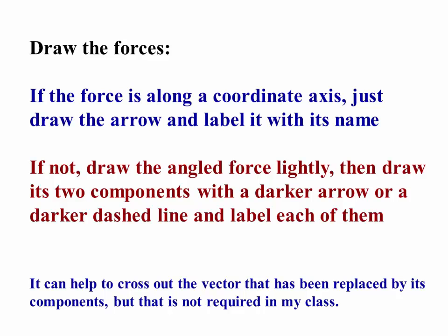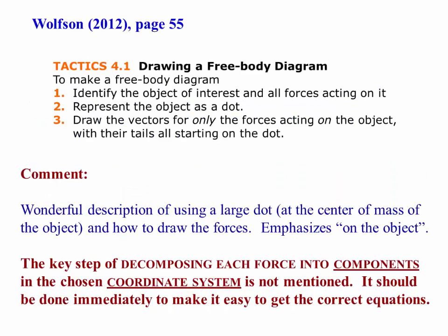If it's not, draw the angled force lightly, then draw its two components with a dark, bold arrow or a similarly dark dashed line and label the components. We're going to use the components, not the force itself, so we want to be sure we clearly label the components with their magnitudes. Sometimes it helps to cross out the vector that's been replaced by its components, but that's not required in my classes.